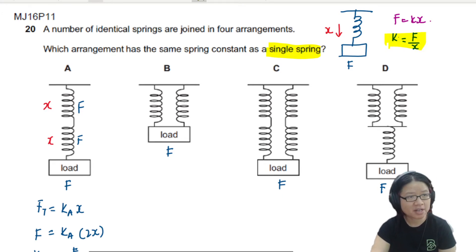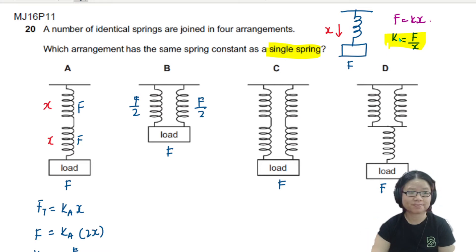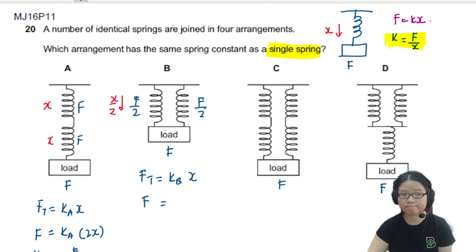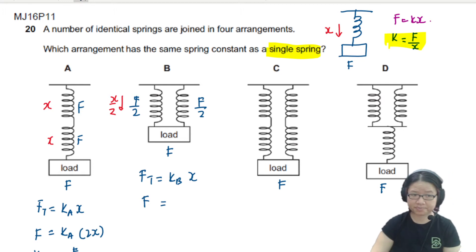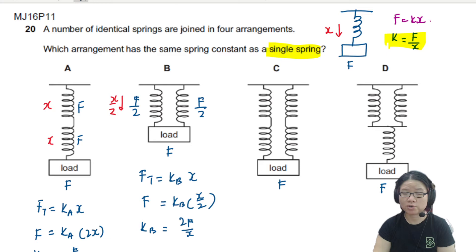For arrangement B, the springs are side by side, so they share the load. You hang F but each spring takes F over 2, meaning half the load gives half the extension. So F = kb times x/2, giving kb = 2F over x. This is not F over x, so arrangement B is also out.